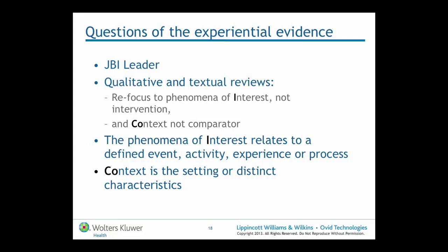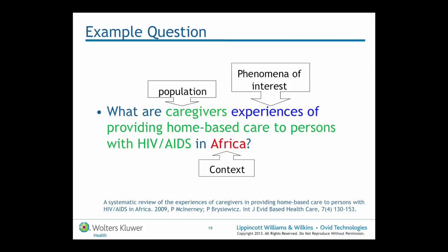The same can be done with other types of evidence. If we have a question of experiential evidence — where the Joanna Briggs Institute has been a recognised leader in developing methodologies of synthesis — we talk about the phenomena of interest, which relates to the defined event, activity, experience or process, and we turn to context rather than comparator. An example in answerable format: 'What are the experiences of caregivers — our population, those providing home-based care to persons with HIV/AIDS — our phenomena of interest — in Africa — our context?' Again, the concepts are clearly visible to help launch the search.